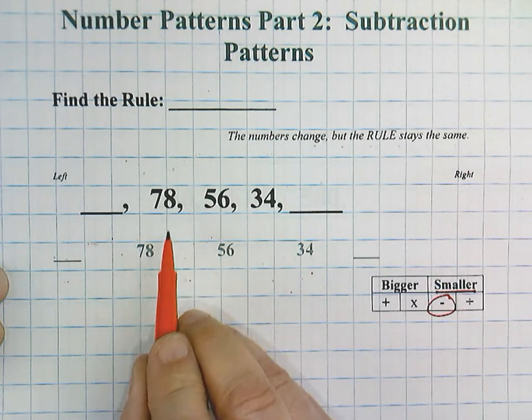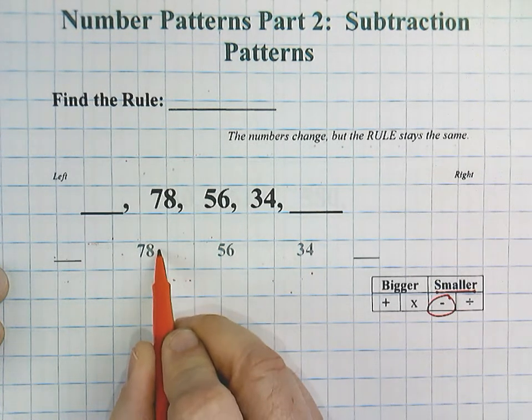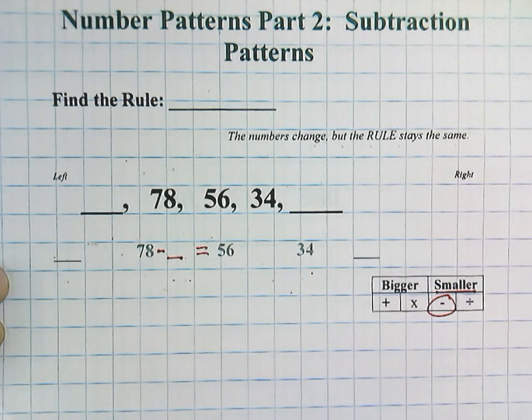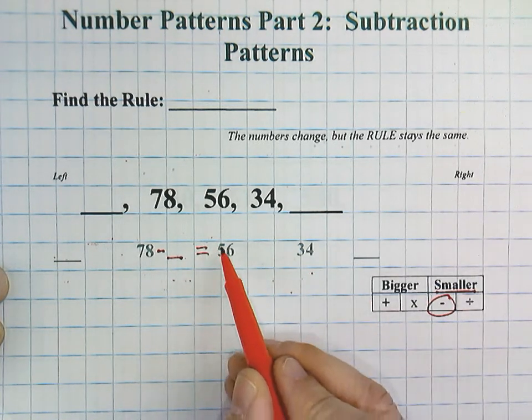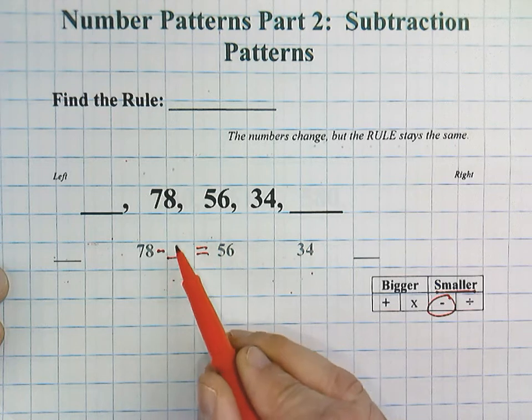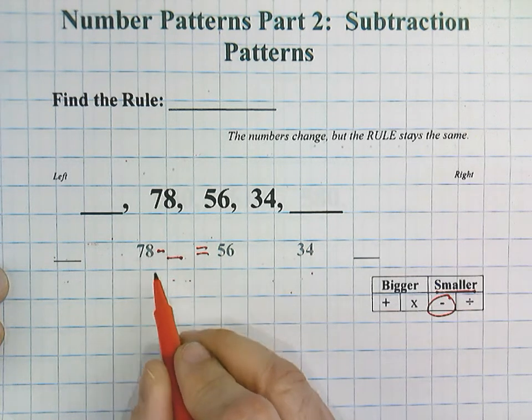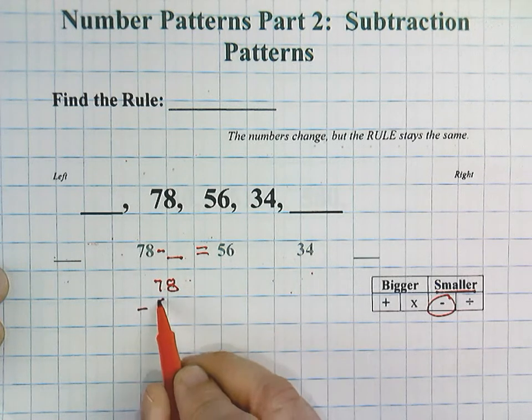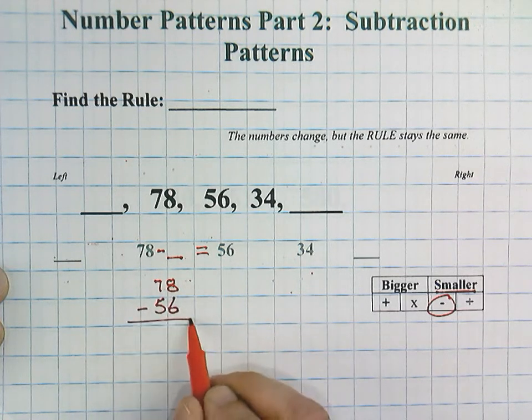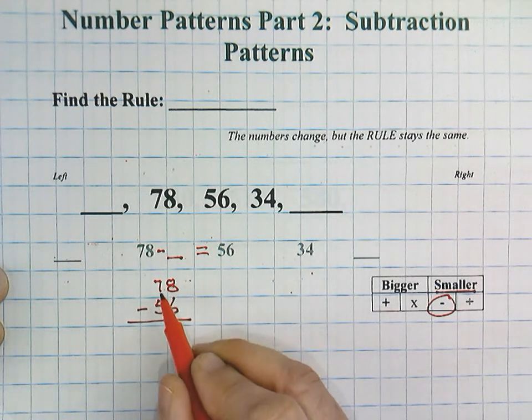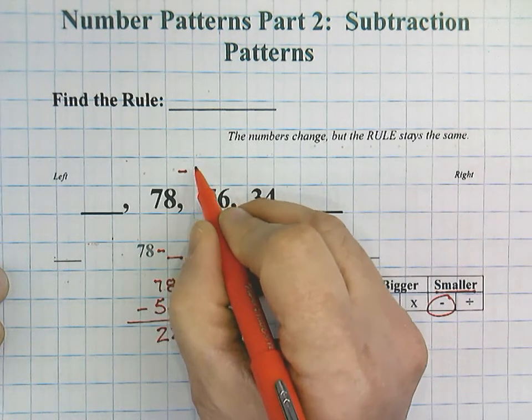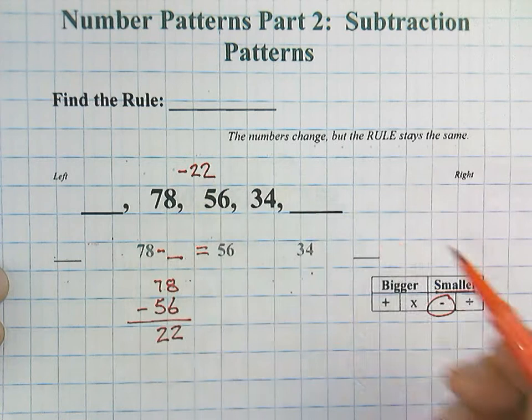So, starting with 78, I'm going to show the steps here. 78 minus blank equals 56. Remember, we can use our fact families, and we can switch these numbers. I'm going to go 78 minus our 56 because of fact families. 8 minus 6 is 2, and 7 minus 5 is 2. So, we have a minus 22 rule.